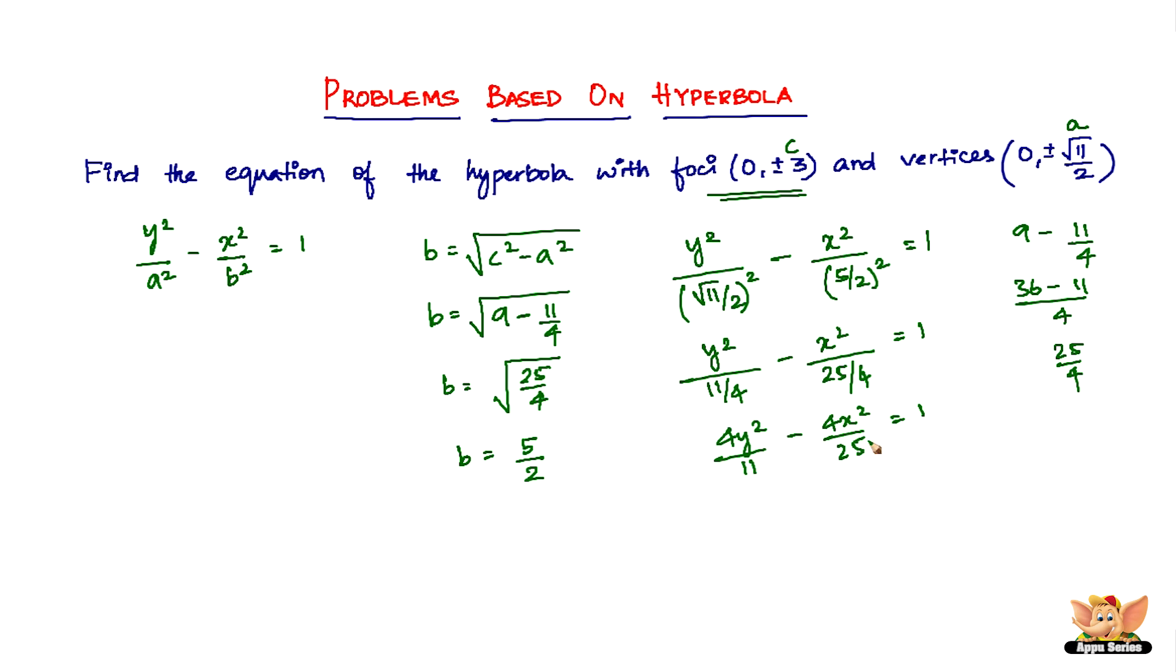Now what we have to do is take the LCM. So the LCM of 25 and 11 would be 275. So we'll have 100y² - 44x² divided by 275 equal to 1, which gives us 100y² - 44x² = 275.